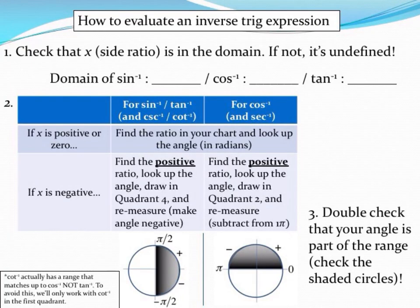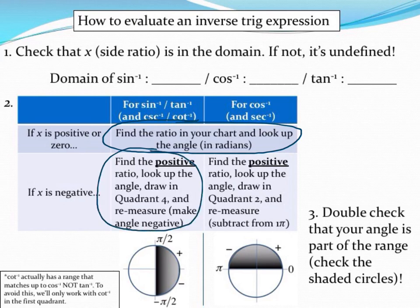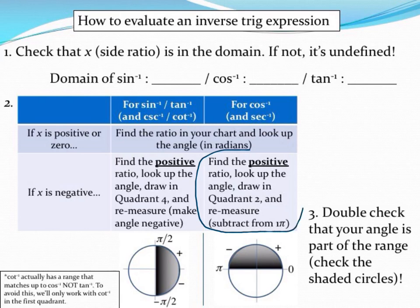In our last video, we looked at how to evaluate inverse trig functions when our side ratio, our x-value, was either positive or zero. We also looked at what to do when it was negative, but only with sine and tangent. If you didn't watch that video, you may want to go watch that one first. In this video, we're going to take a look at what to do for cosine when our inverse cosine ratio is negative.